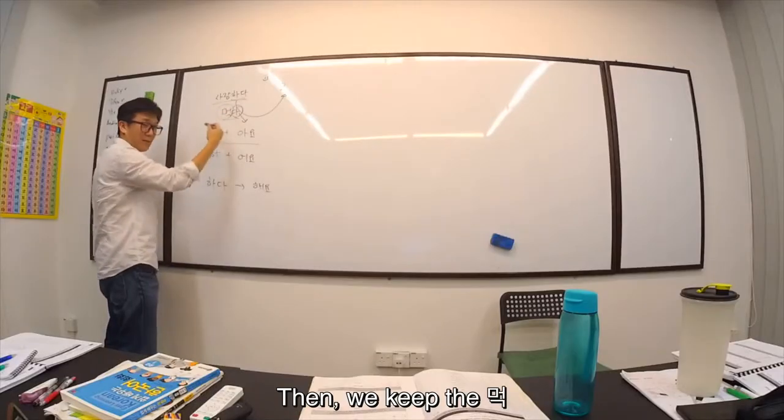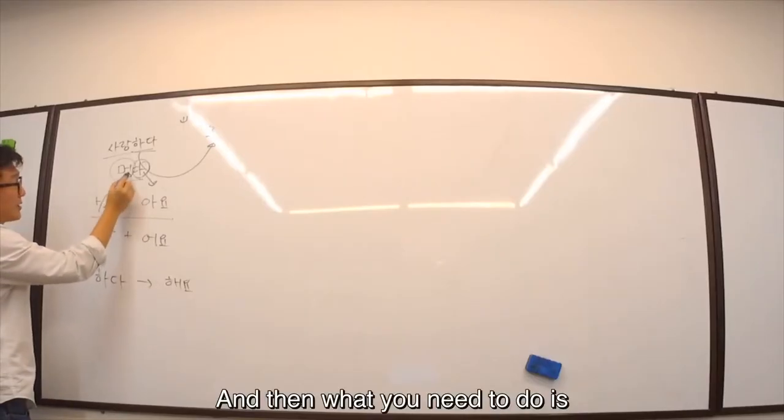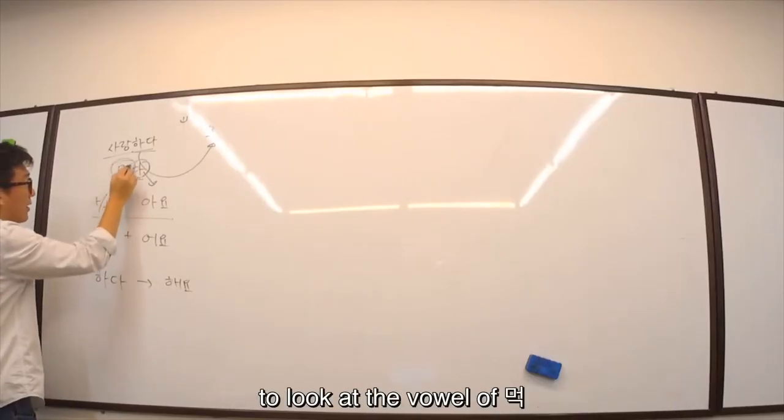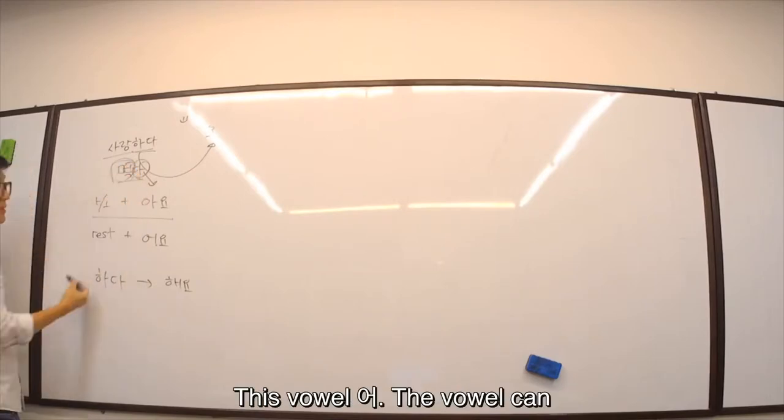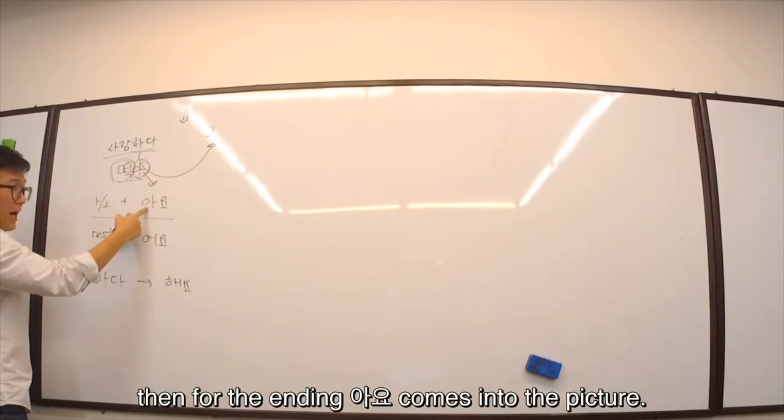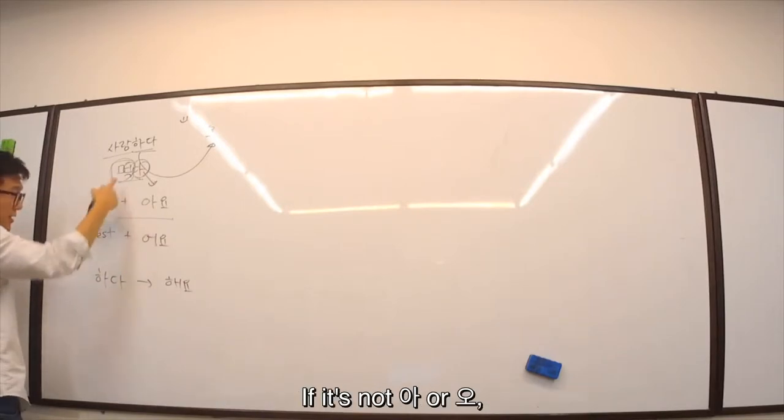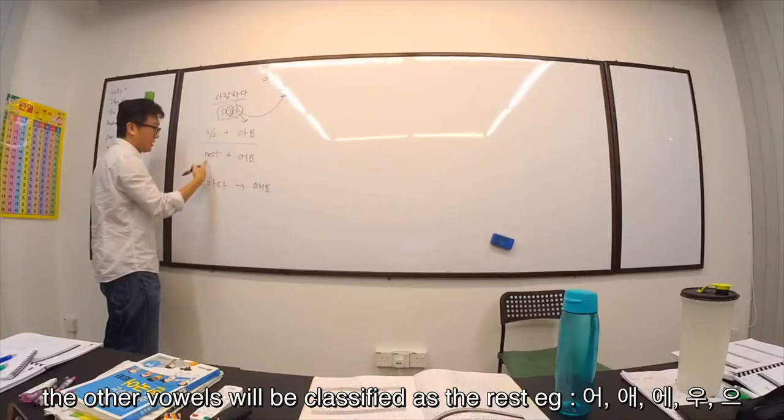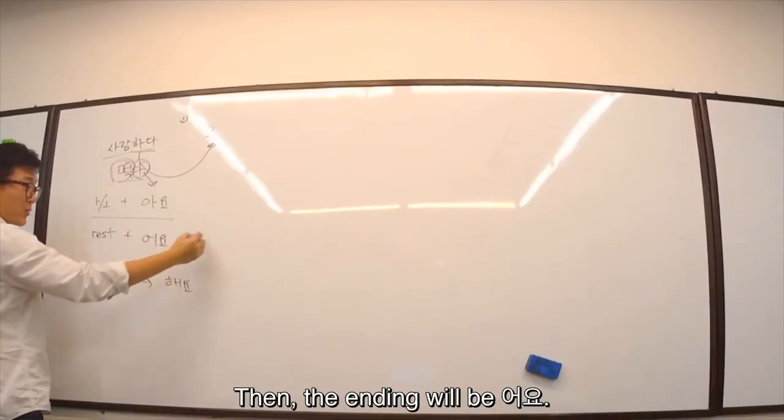Then we stay in 먹. And then when you do it, look at this. Have a look at this. This vowel. This vowel is either ㅏ or ㅓ. Then ㅏ or ㅓ comes in. If not, if not this, the other vowels will be classified as the rest, eg: ㅗ, ㅣ, ㅜ, ㅡ, ㅔ. So it becomes 먹어.